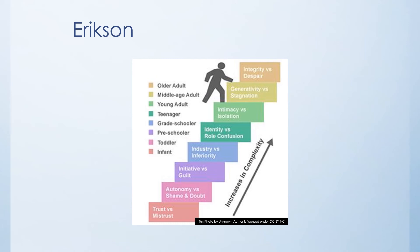Continuing through Erikson's stages: identity versus role confusion in the teen years, intimacy versus isolation, generativity, and finally integrity versus despair in older adulthood. These stages span from infancy throughout older adulthood. Each time we discuss hospitalization at a different developmental stage, we'll revisit what Erikson's theory means in that context.